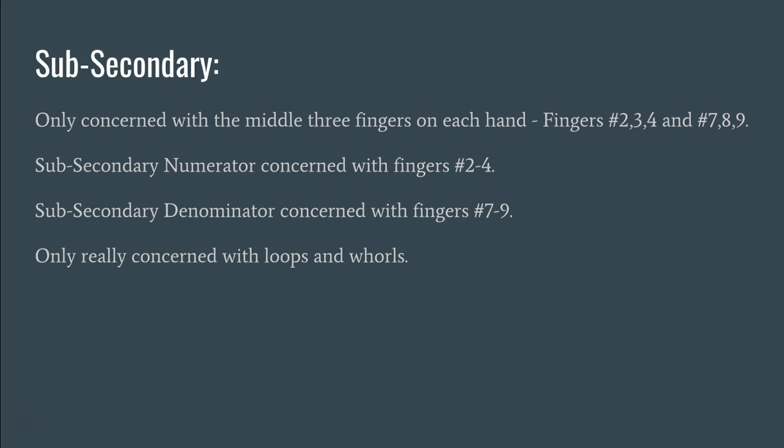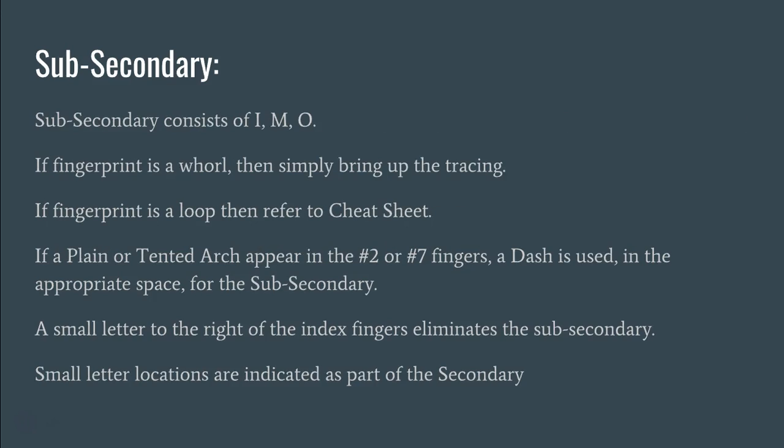The sub-secondary is only concerned with the middle three fingers on each hand — fingers 2, 3, and 4 for the numerator, and fingers 7, 8, and 9 for the denominator. The sub-secondary only concerns whorls or loops. If there are other fingerprint types like a plain arch or tented arch, we won't have a sub-secondary. The sub-secondary consists of capital I's, M's, or O's. If the fingerprint is a whorl, you bring up the tracing. If it's a loop, you refer to the cheat sheet. If fingers 2 or 7 are plain or tented arches, you put a dash in the appropriate spot.